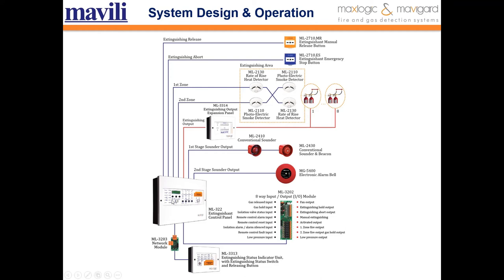In the system design, the extinguishing control panel is connected with an electronic alarm bell for the first stage — this is the pre-alarm stage. We use conventional sounders or conventional sounder beacons. For the second stage, when the extinguishing process starts and the tubes are releasing, the second stage sounder rings.